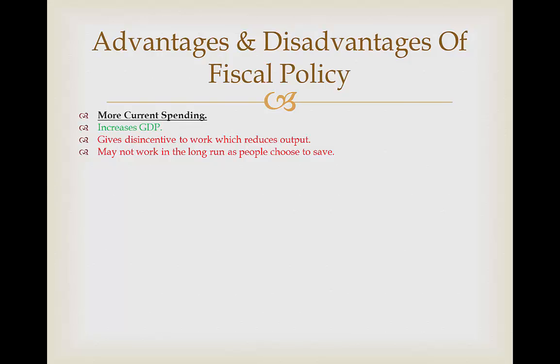Also, this may not work in the long run as perhaps if the economic climate changes and we experience an increase in interest rates or inflation, people may want to save their money and this is just going to be wasted money because it's not going to be spent. However, it can reduce crime — if people are given more income and it fixes economic income inequality, people aren't going to resort to crime. However, this increase in aggregate demand is going to cause inflation, and spending money on people in the form of benefits is going to cost the government money which they could be using to improve infrastructure.